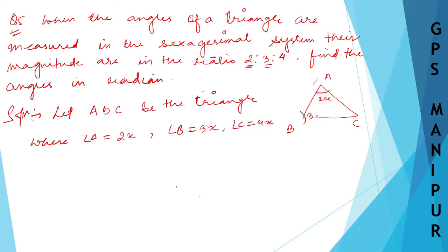Now we know that angle A plus angle B plus angle C is equal to 180 degrees, the sum of the angles of a triangle is 180 degrees. So it will be 2x plus 3x plus 4x equals 180 degrees.